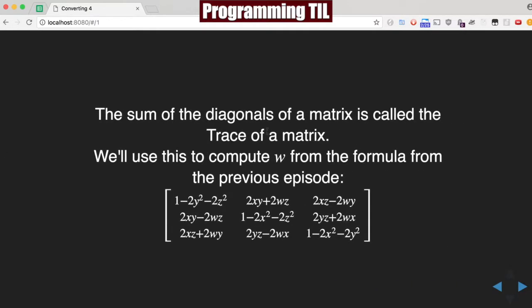So we're going to use this formula for the diagonals of a matrix that's called the trace, and we can use that to compute W, and we're going to use the formula from the previous episode for the matrix to do it. So we have this previous one. If you want to know how we calculated this previous formula, go ahead and check out that last episode.